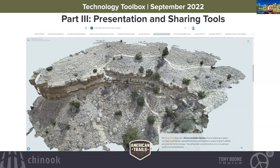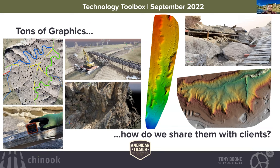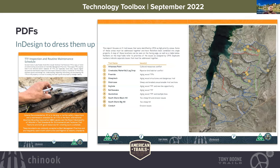Now we're to part three: presentation and sharing tools. We have tons of graphics — GIS maps, site photos, point clouds, 3D meshes, DEMs — but how do we share them with clients? The easiest way is a PDF, but we can use Adobe InDesign to make the PDF a lot more interesting, easier to read, and easier for clients to share. A lot of times our clients in a planning phase still need to figure out project funding. Something that just looks better will go a lot further when going after a grant funding source compared to other projects that are just in a Word document.